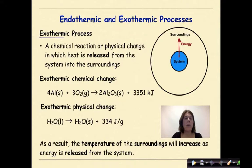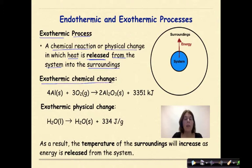Now let's look at an exothermic process. This can be a chemical reaction or physical change in which heat is released from the system into the surroundings. An example of an exothermic chemical change could be aluminum reacting with oxygen to form aluminum oxide and an amount of energy — in this case 3,351 kilojoules per every two moles of aluminum oxide.